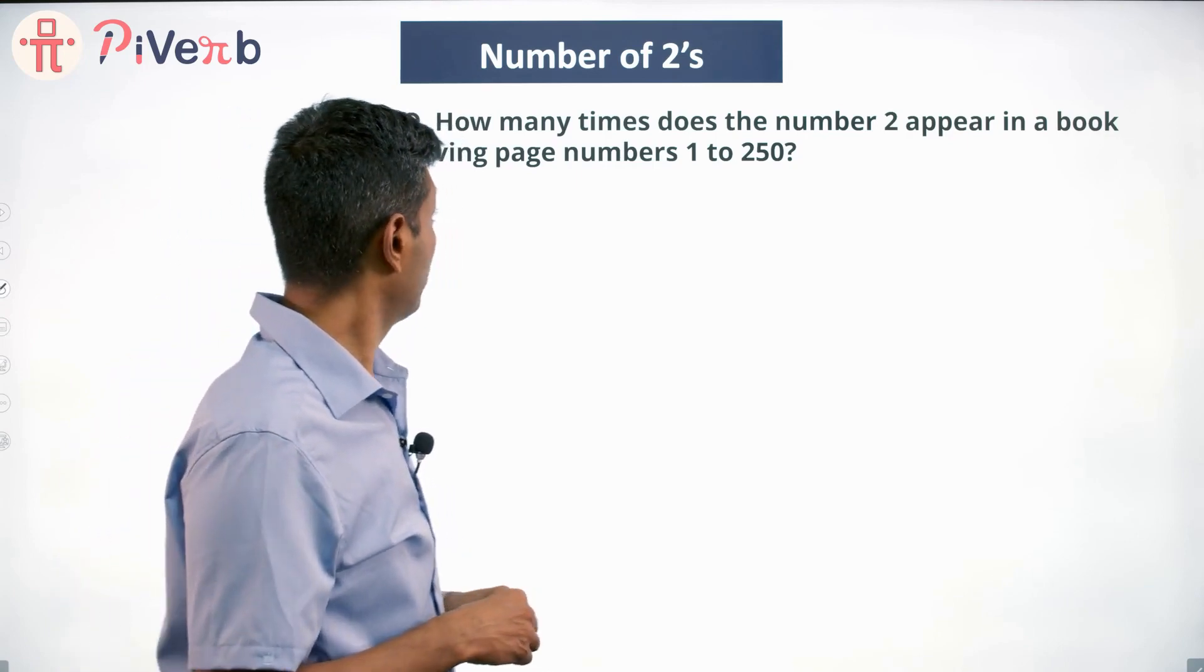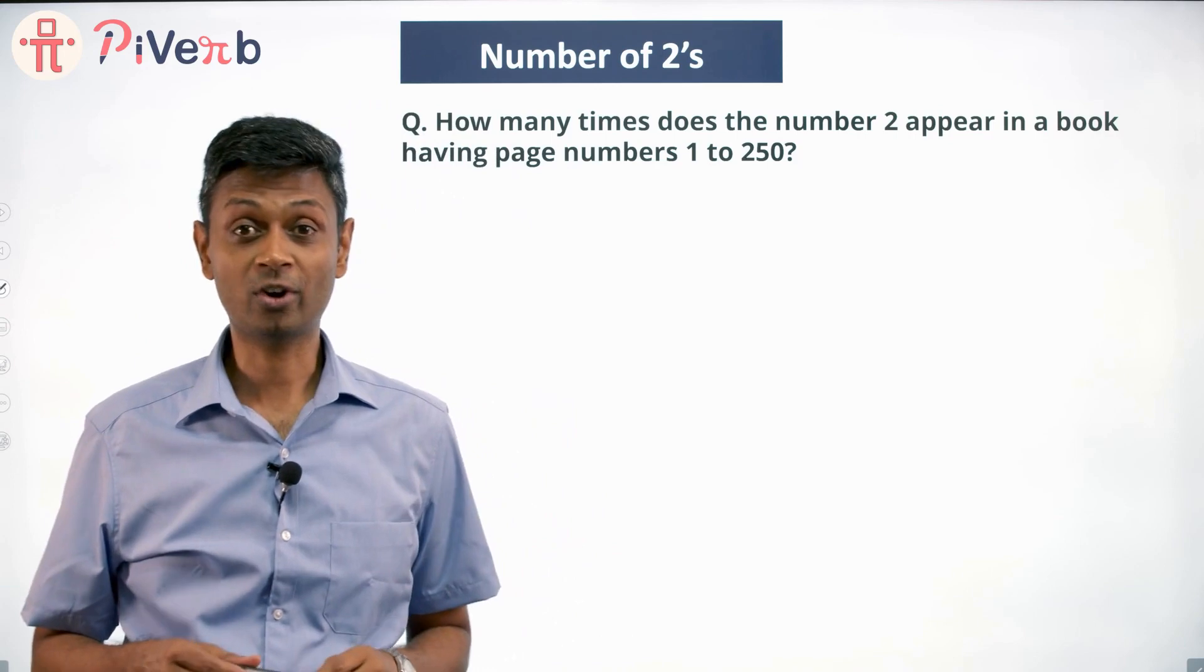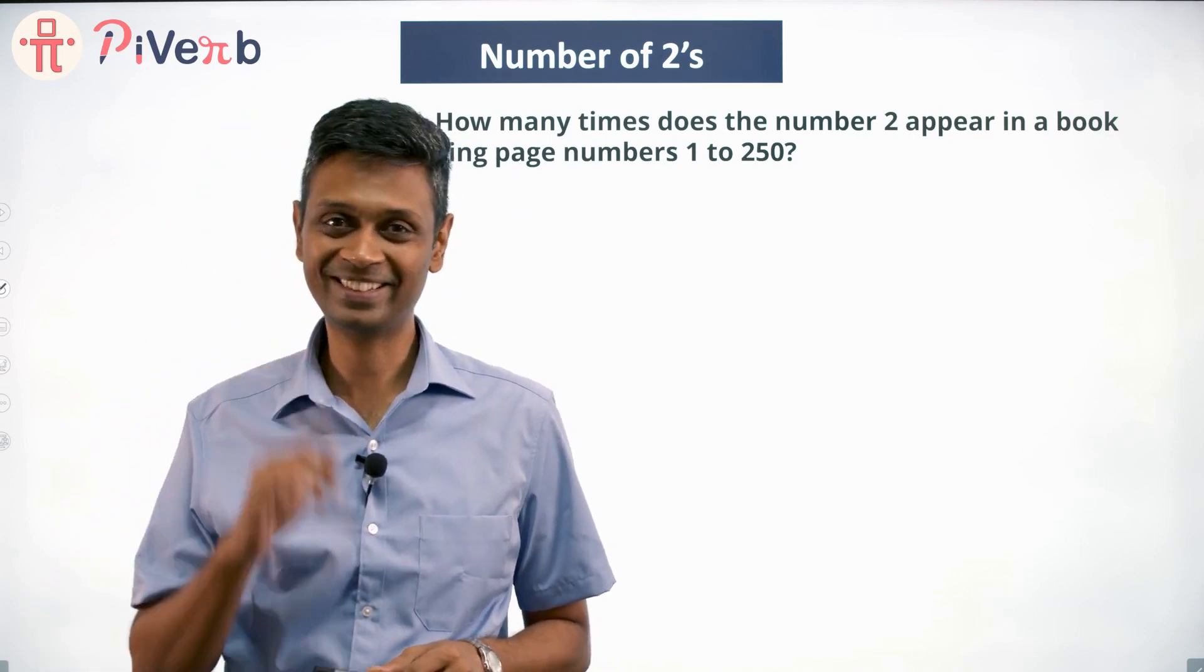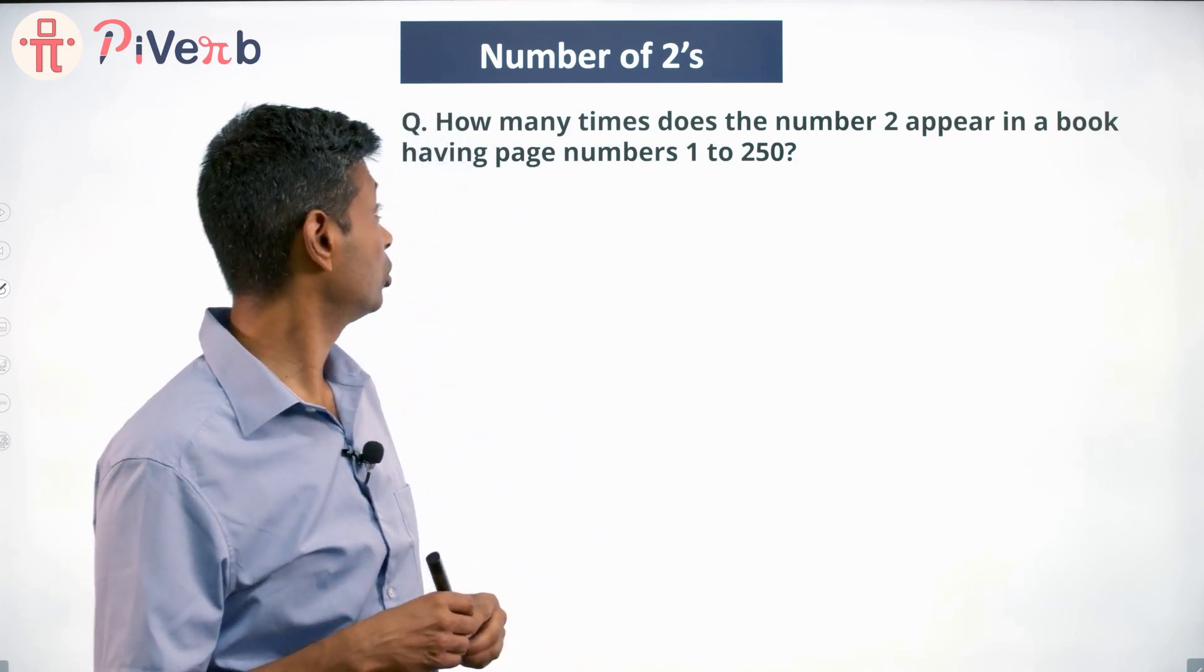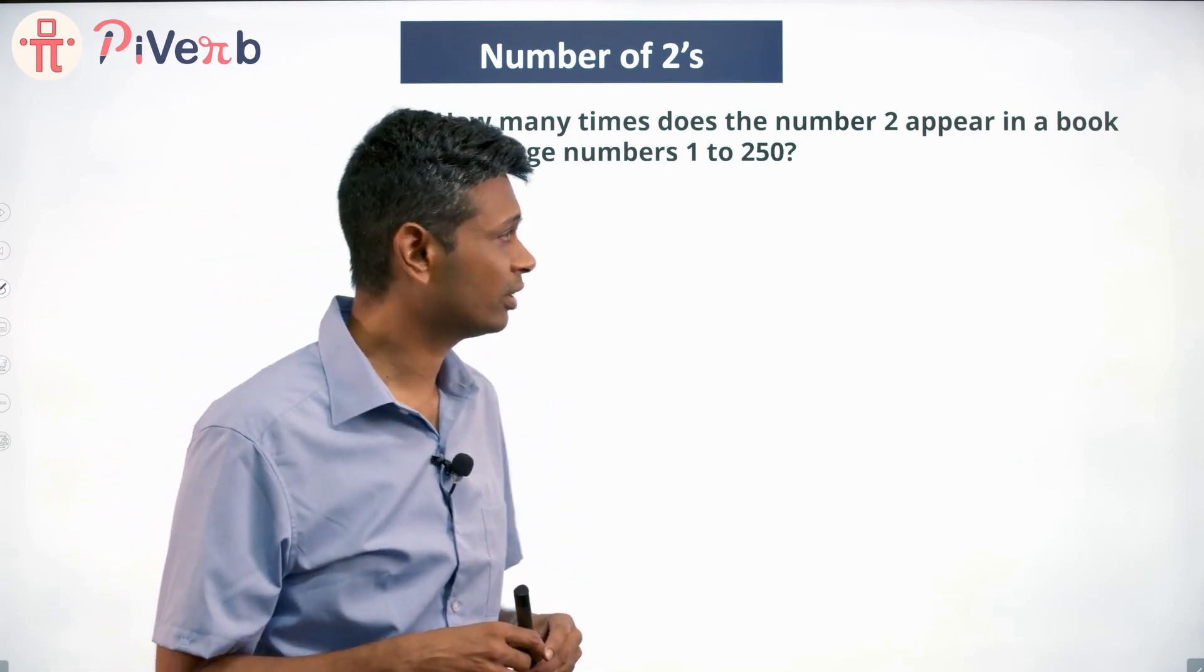How many times does the number 2 appear in a book having page numbers 1 to 250? I got this wrong, so I'm going to be very careful with this question. How many times does the digit number 2 appear in a book having page numbers 1 to 250? Let's do 1 to 10.